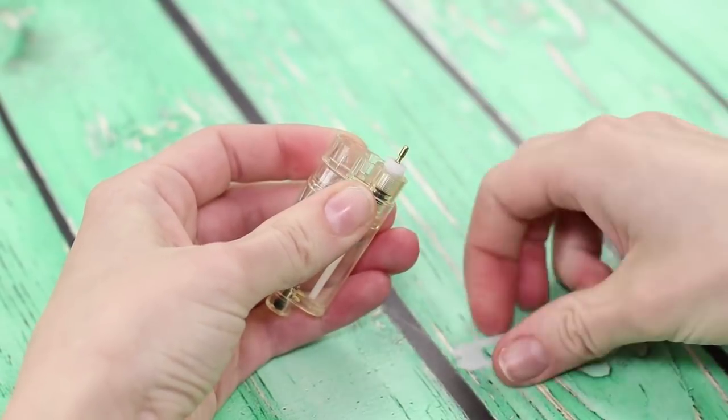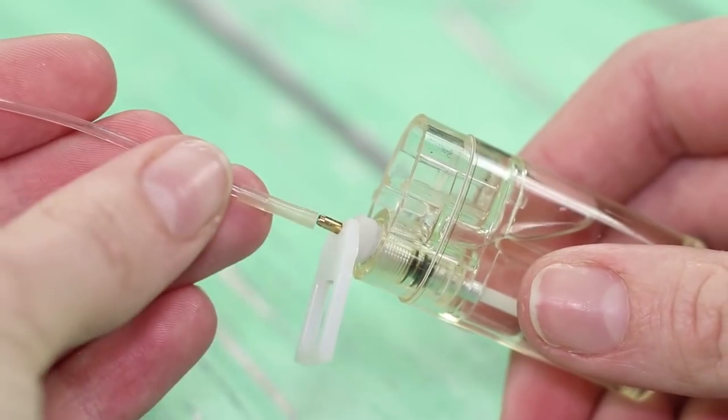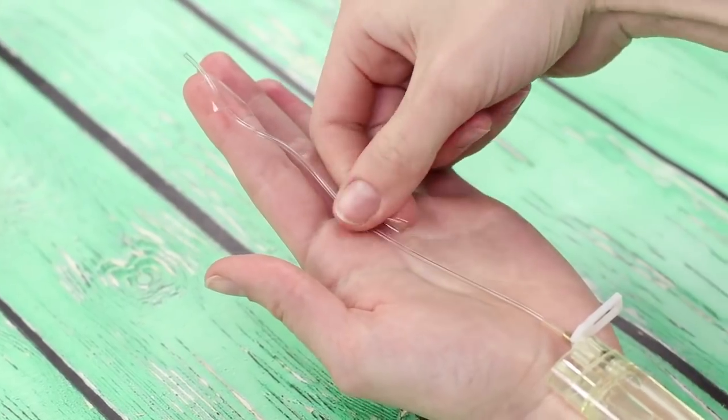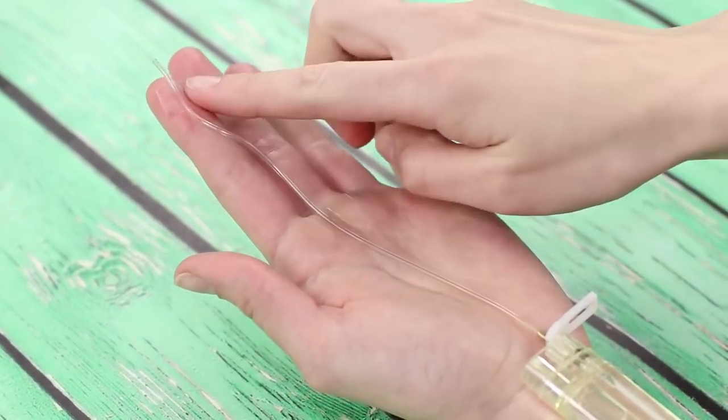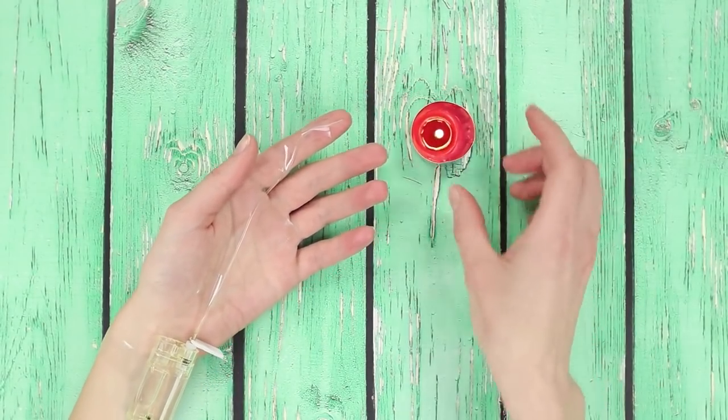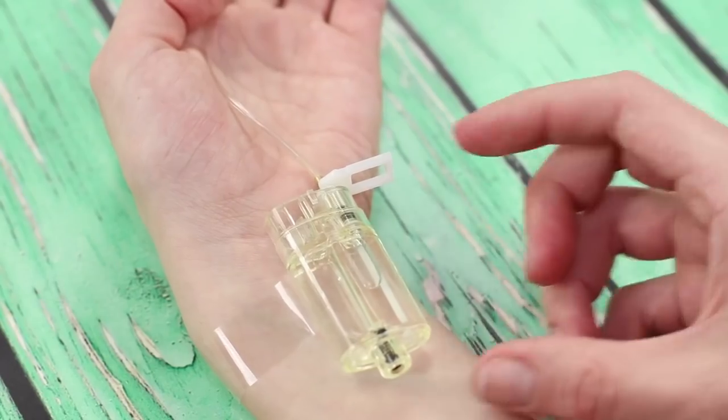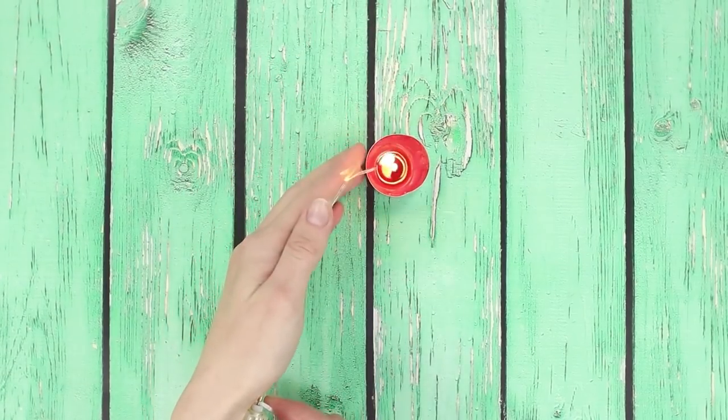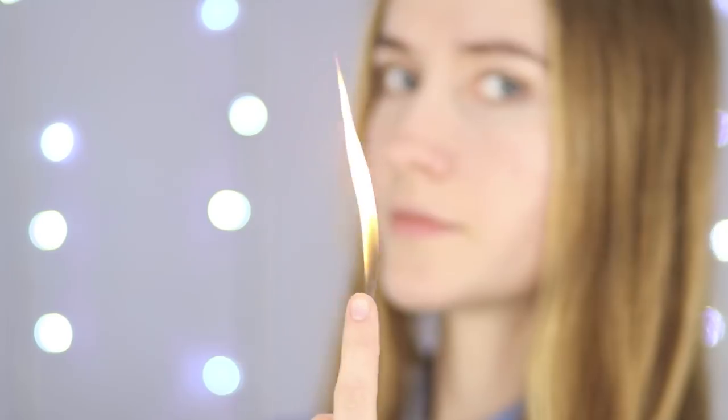Attach the gas mechanism to your wrist with the help of some tape. Position the tube along your index finger so that its end sticks out a bit above the nail. Press on the gas release button and look for a flame source. Just remember, safety first!